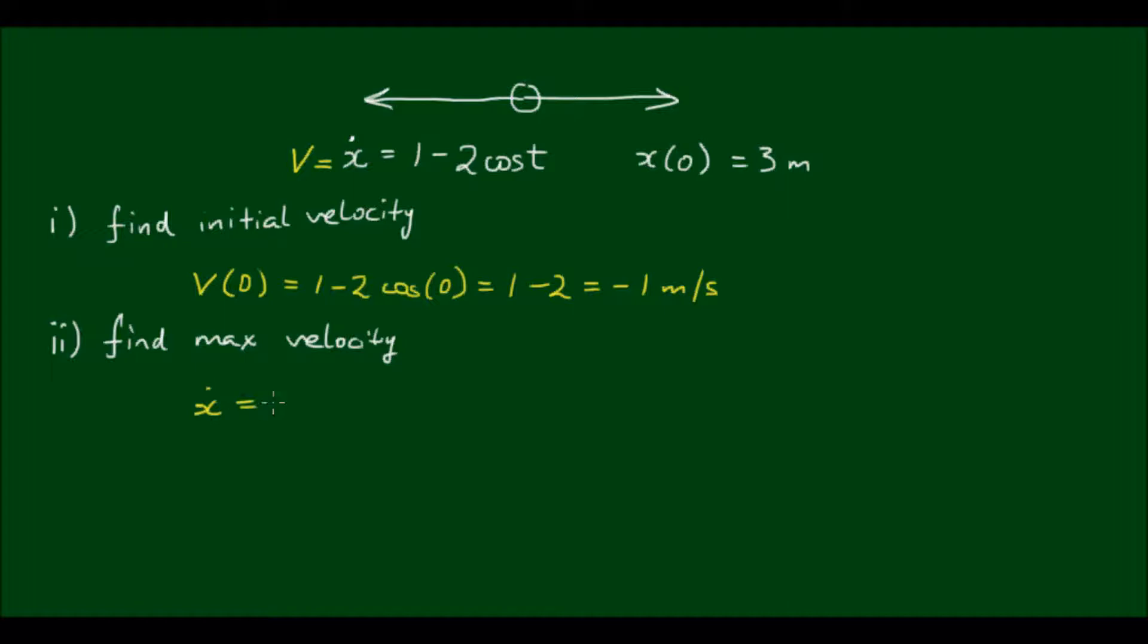So ẋ equals 1 minus 2cos(t). Now this cos(t) part can only be in the range from negative 1 to 1. The velocity where it's maximum is going to be when cos of t equals negative 1. Because we have 1 minus 2 times negative 1 equals 1 plus 2, which equals 3. So the maximum velocity is 3 meters per second, and the particle is traveling towards the right.